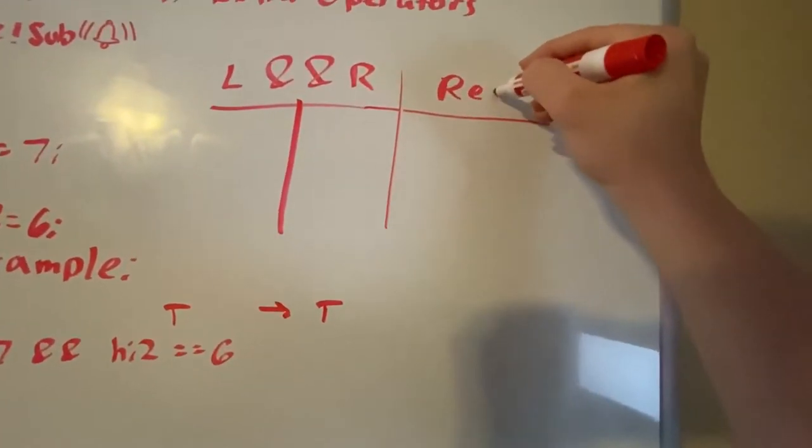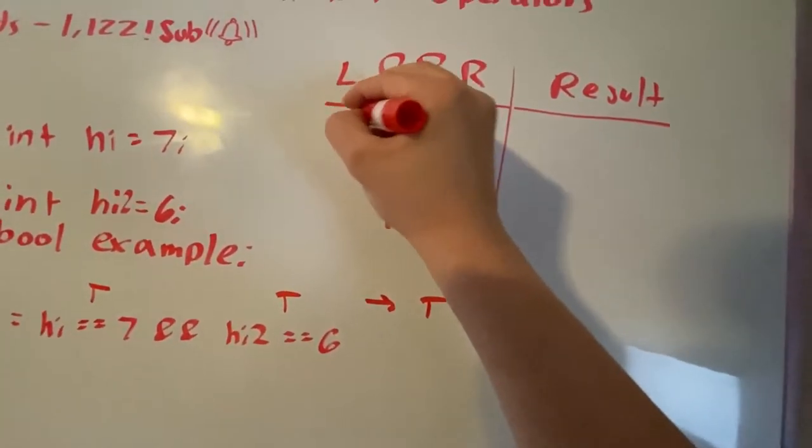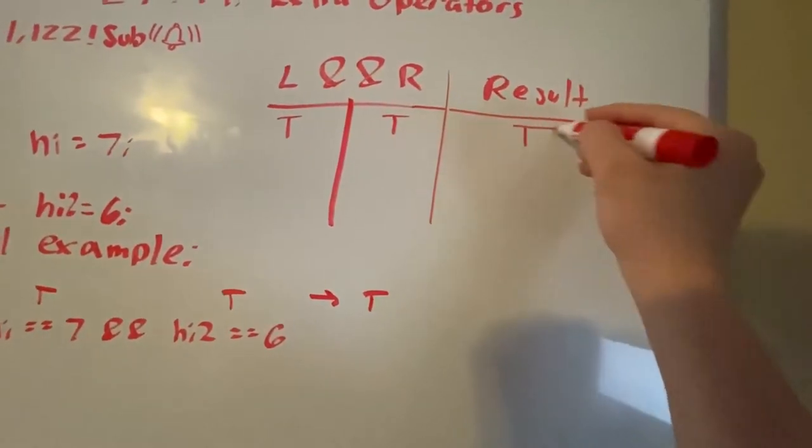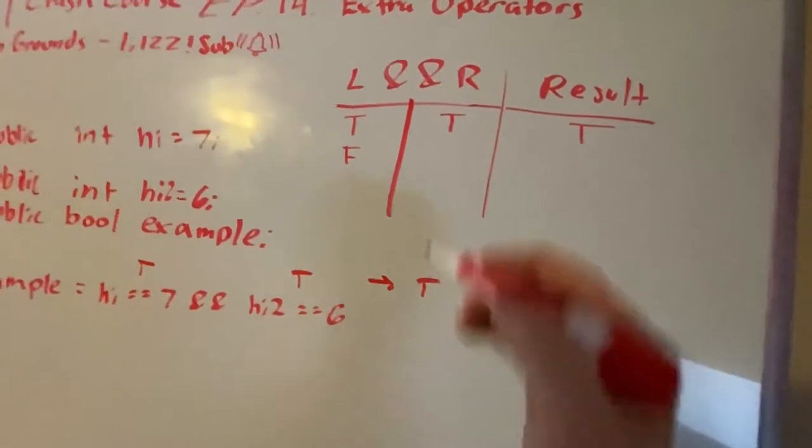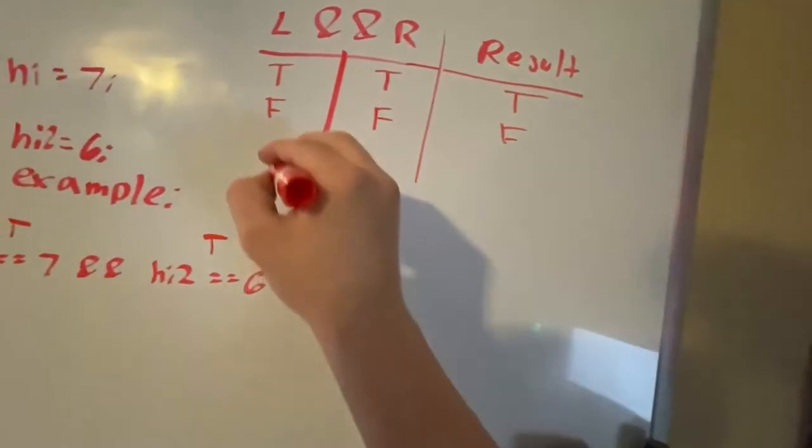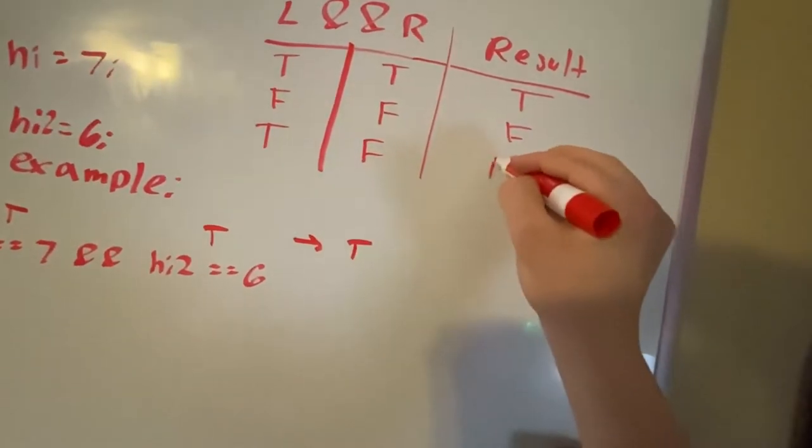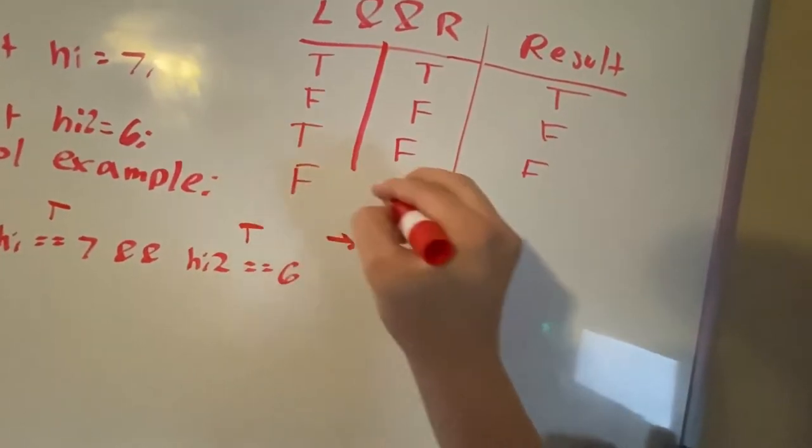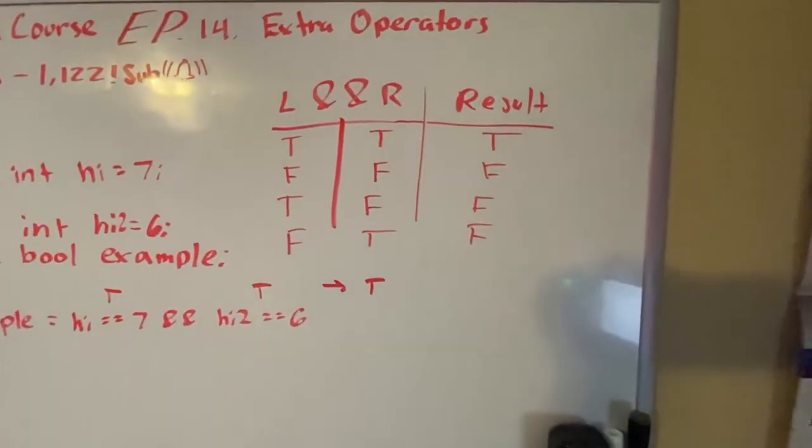And we'll put this as a result, hopefully it's not too confusing. So if left is true and right is true, then the result can be true. If left is false and right is false, then of course the result can be false. However, if one of them is false, then the result is false, same vice versa. Works that way, just like that.